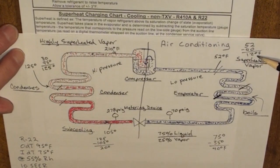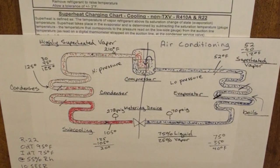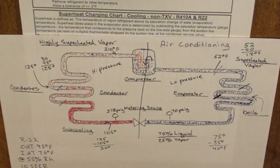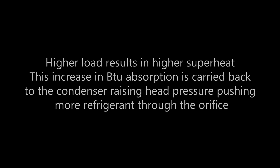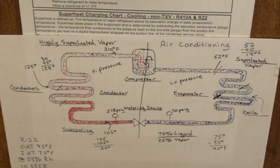Instead of 12 degrees of superheat, we may in some cases have 20 or 25. Unlike subcooling, the outdoor and indoor conditions have a much greater effect on how much refrigerant is fed to the system. In other words, a correct charge may in fact have 15, 18, 20 or more degrees of superheat.